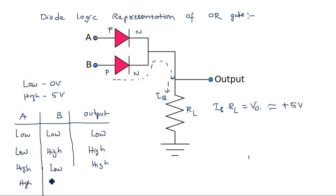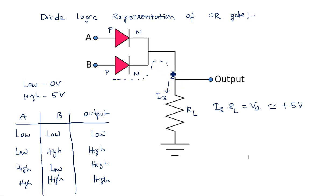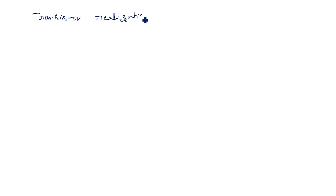When both inputs are high, the combination of currents flows through and the output is also high. This is how the diode logic OR gate operates — using diodes and a resistor, which we call diode logic or DL. This completes the diode realization of the OR gate.